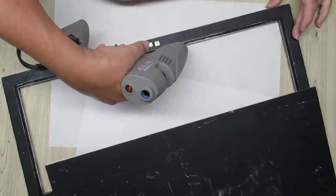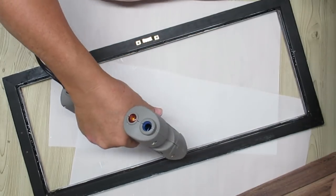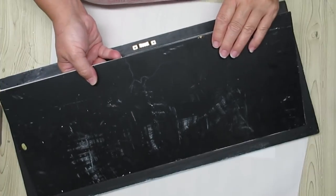Using some hot glue, I'm just going to put it on the inside of the frame here and just place the backing right back where it belongs.